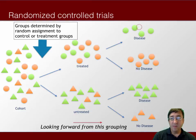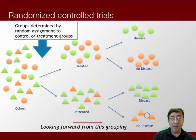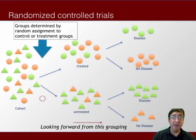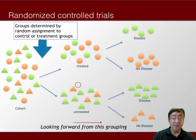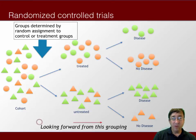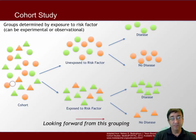Following treatment, subjects are evaluated for the presence of the disease or other outcome of interest. The proportion of people with the outcome in the treated group can be compared with the proportion in the untreated group, and then we can make an assertion of causality. If there's a difference that we detect, we can attribute that difference to the treatment given to the subjects. This is an example of an experimental study where we look forward from our original grouping of individuals.